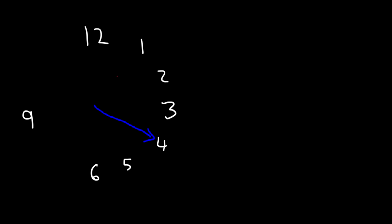So if it's 1:20, that means the hour hand is between 1 and 2. The minute hand has to be at 4. I'm going to use blue to represent the minute hand, which is the long one, and red to represent the hour hand. Now, if the hour hand is between 1 and 2, where exactly is the minute hand? So focus on the minute hand, which is at 20.